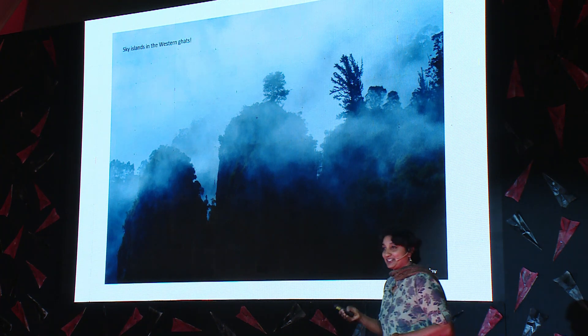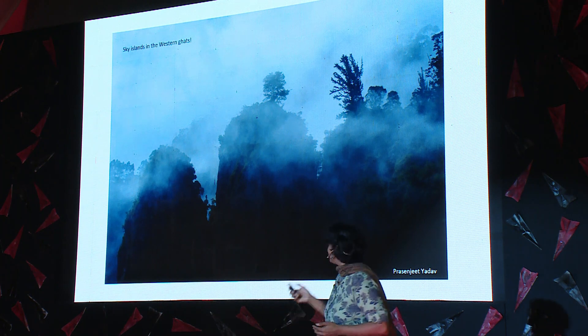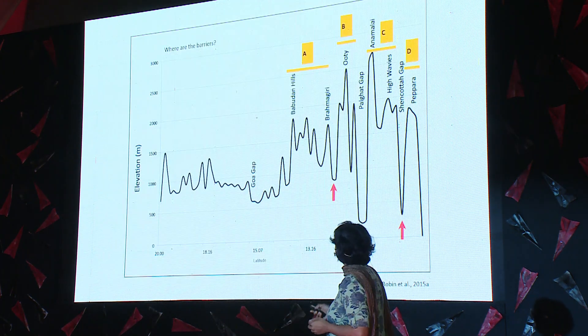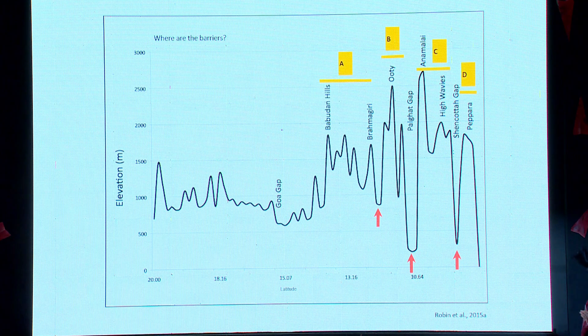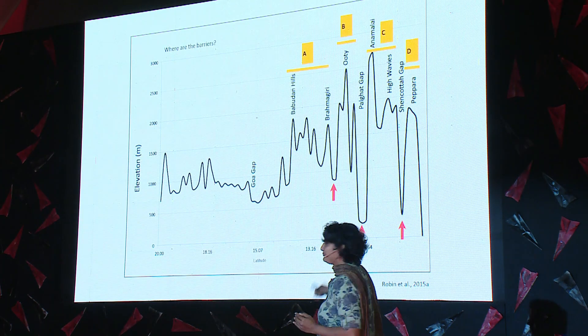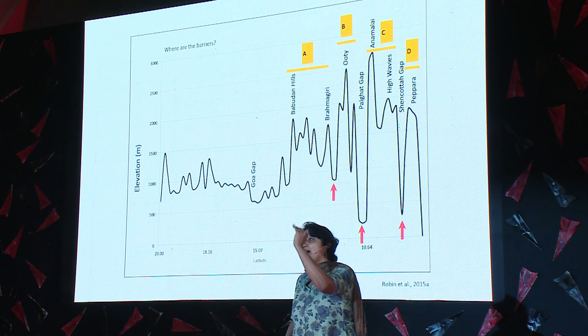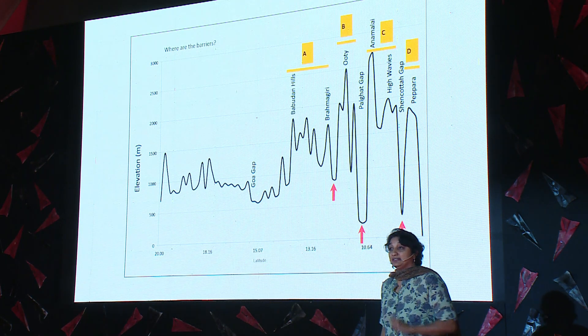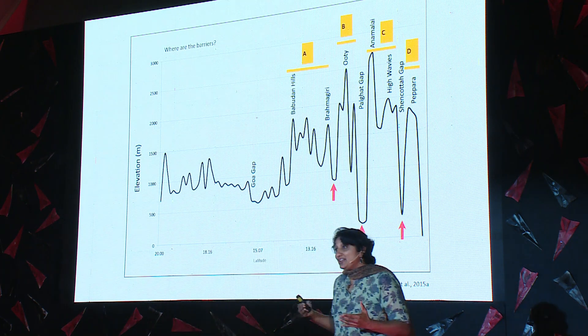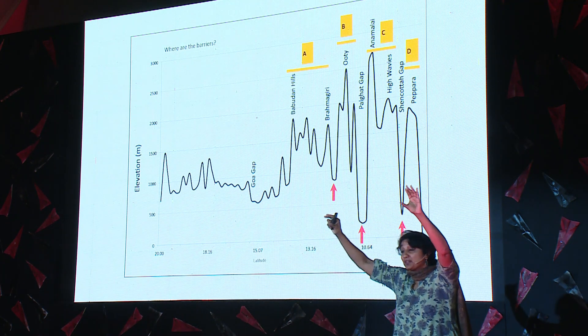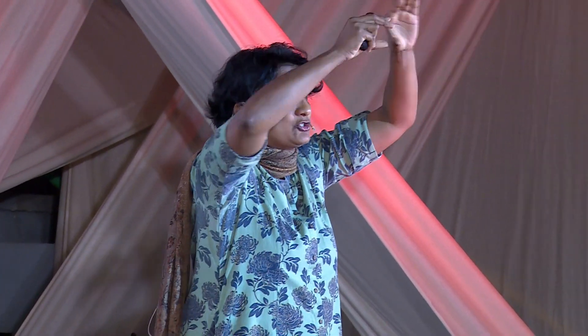Now we have to actually test this. We can look at a cross-section of the Western Ghats, and you can see the mountain going up and down. There are parts where it goes really low — that deep valley is the Palghat Gap, where the Western Ghats breaks for about 40 kilometers and starts up again. So for species which live on those mountain tops, the biggest barrier in this whole range is the Palghat Gap. We need to understand if this is actually true.